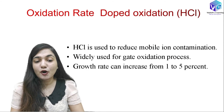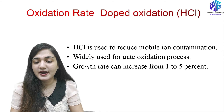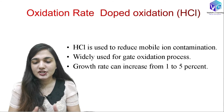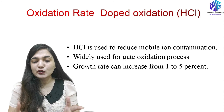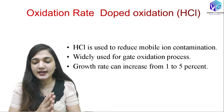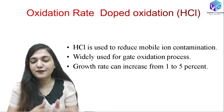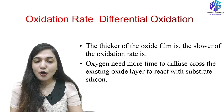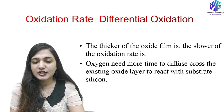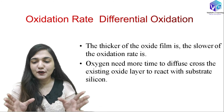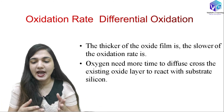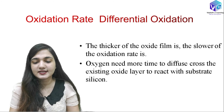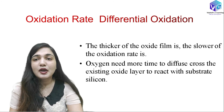HCl is used in oxidation to reduce mobile ion contamination and is widely used for gate oxidation. Using HCl can increase the growth rate by 1 to 5 percent. Regarding differential oxide thickness: whenever there is a thicker existing oxide film, the oxidation rate is slower because oxygen needs more time to diffuse across the existing oxide layer to reach the silicon substrate.